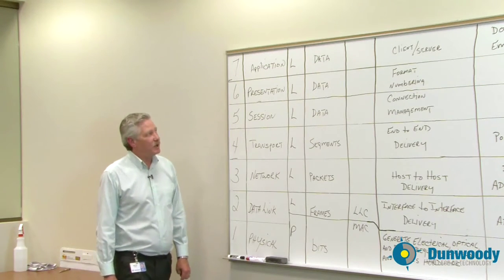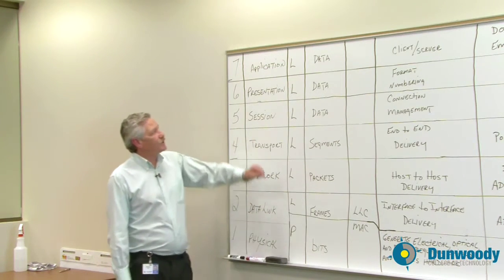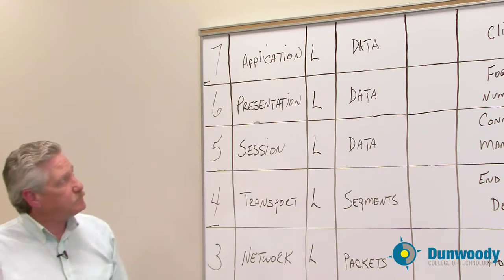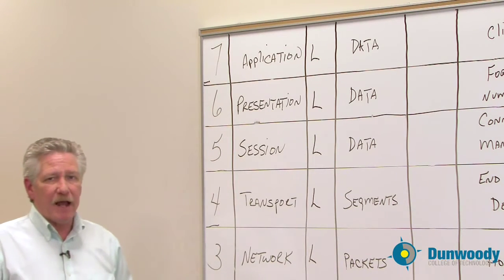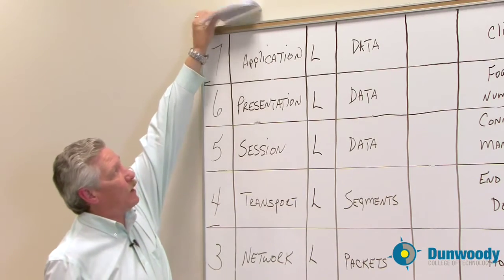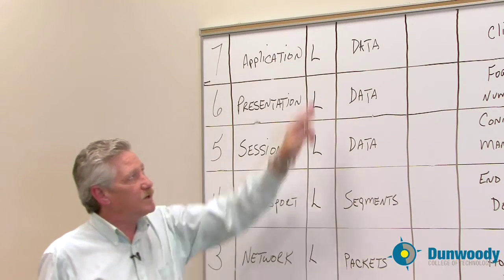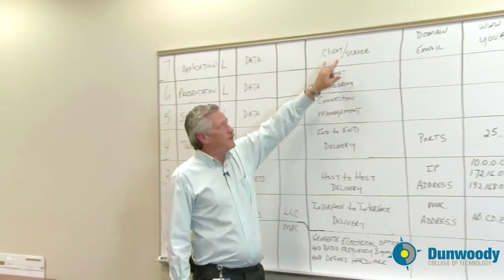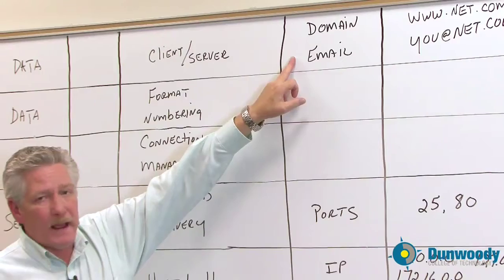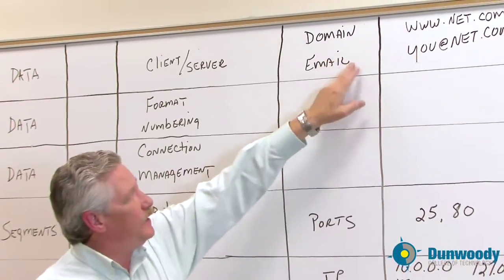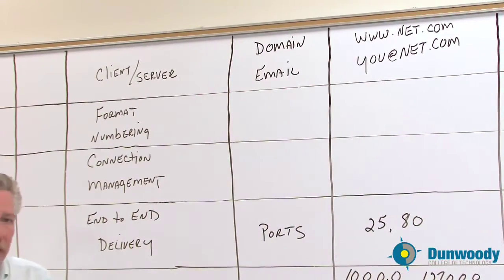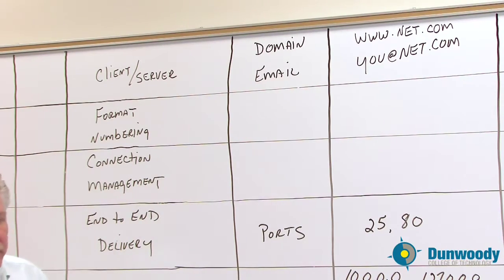Last but not least is the application layer. Don't confuse application with programs or software — that's not what this is about. When you talk about applications such as Microsoft Office products, email, or web browsers, you're above the application layer. Once again, it's logical and the PDU is data. Here we're dealing with client-server domains and email addresses — the addresses that we use, such as www.net.com for a web address, or you@net.com for an email address.